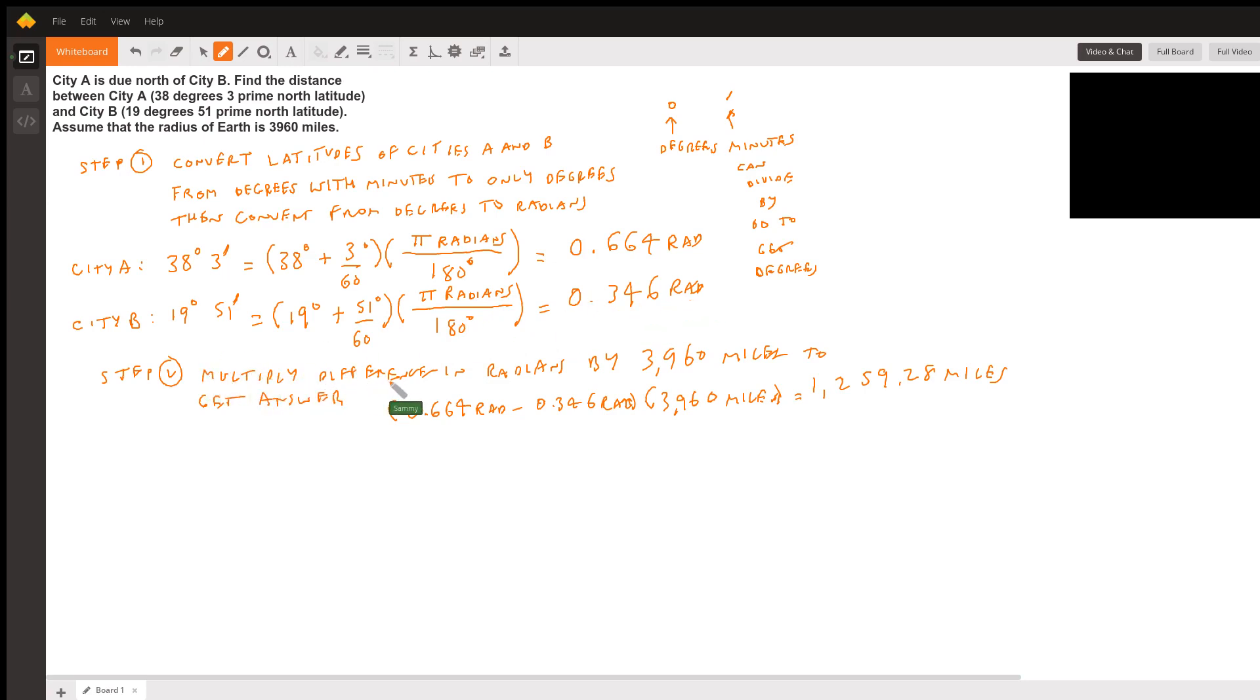Step two is to multiply the difference in radians by 3960 miles to get the answer. We'll take City A, which is 0.664 radians, minus City B, which is 0.346 radians, and then multiply it by the radius of the Earth, which is 3960 miles.